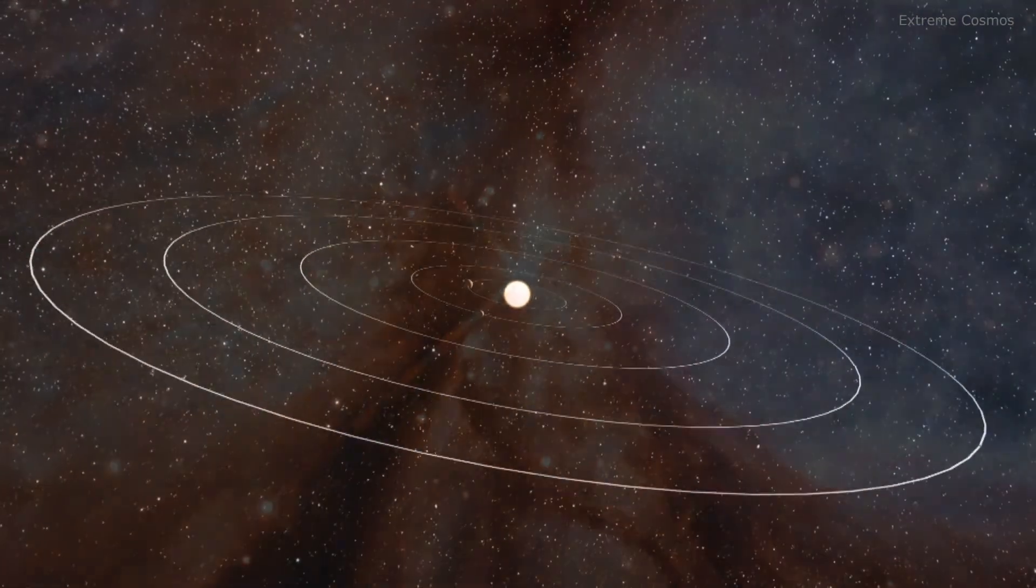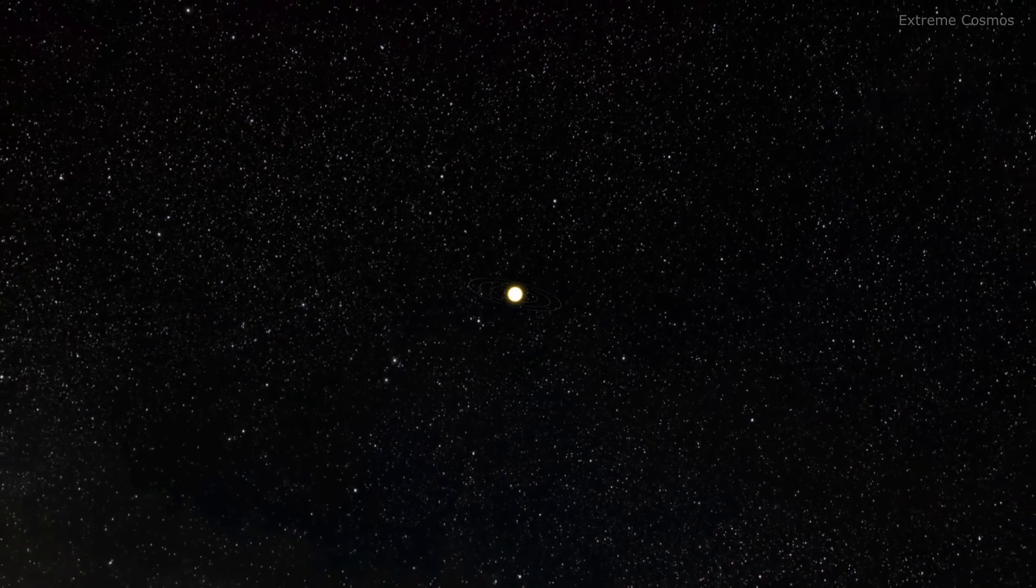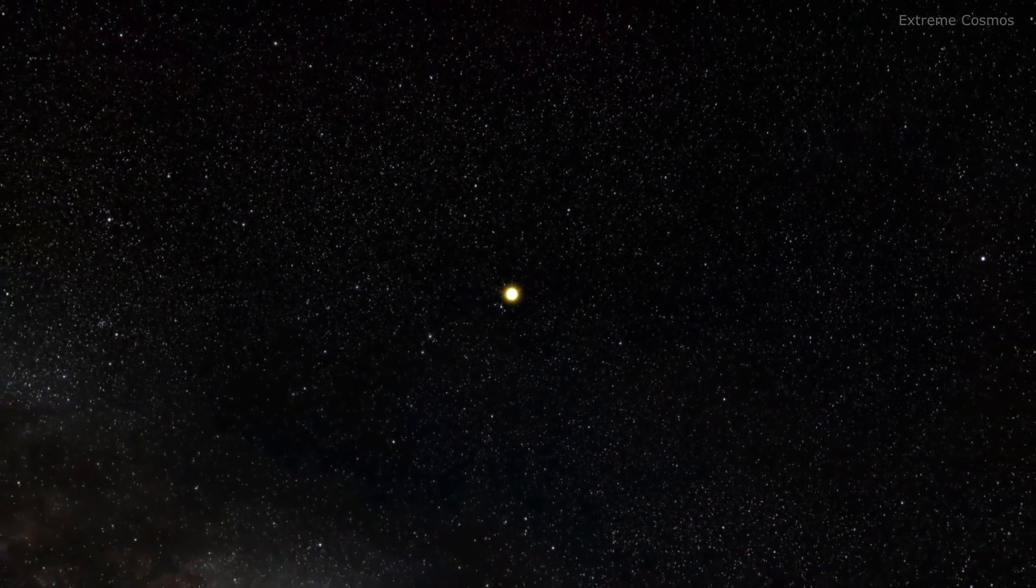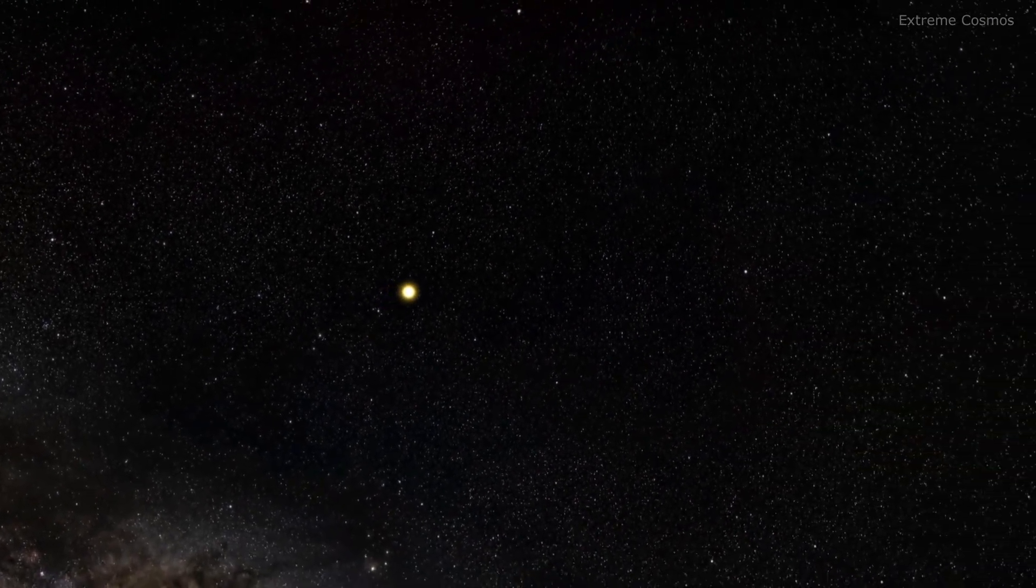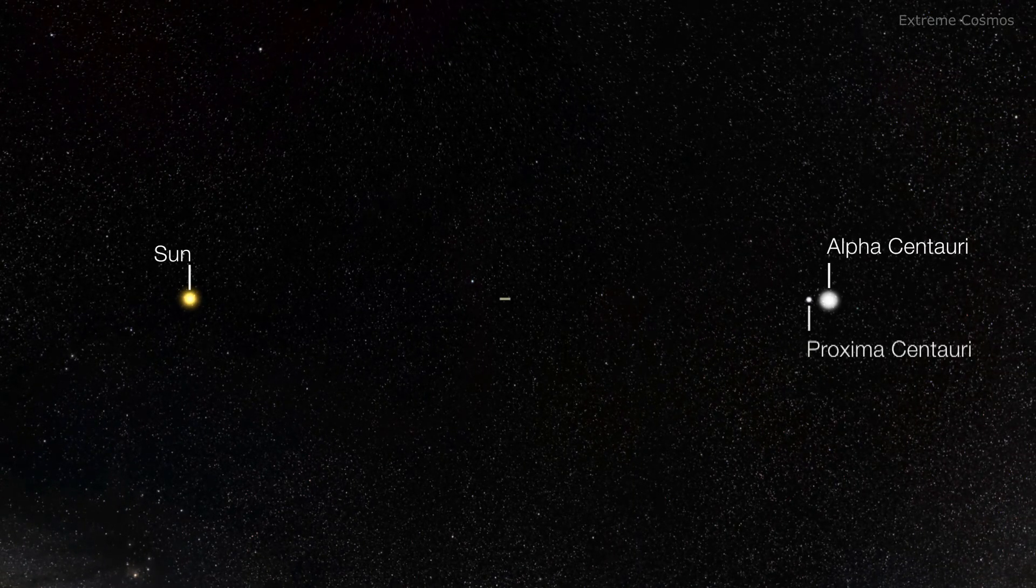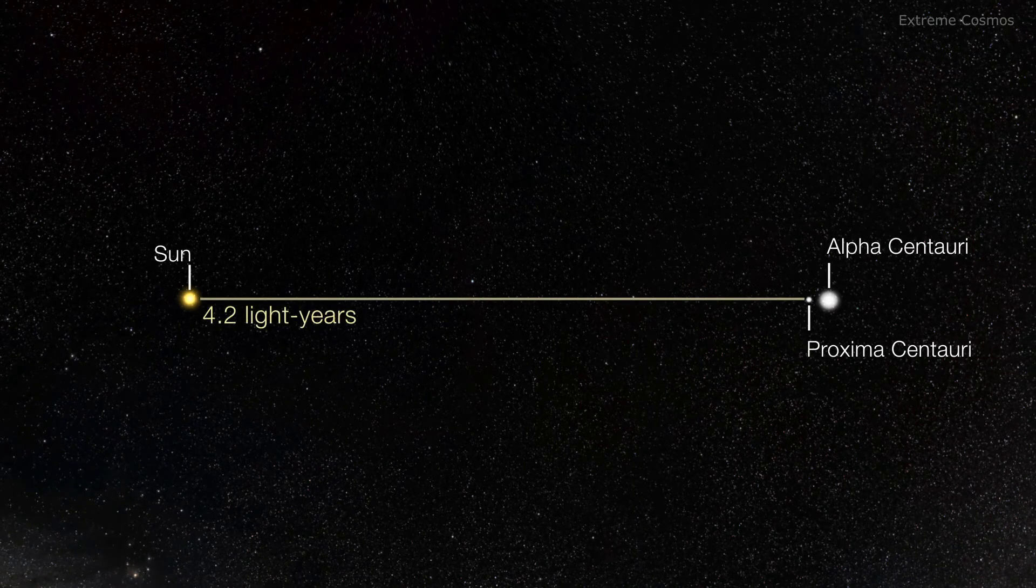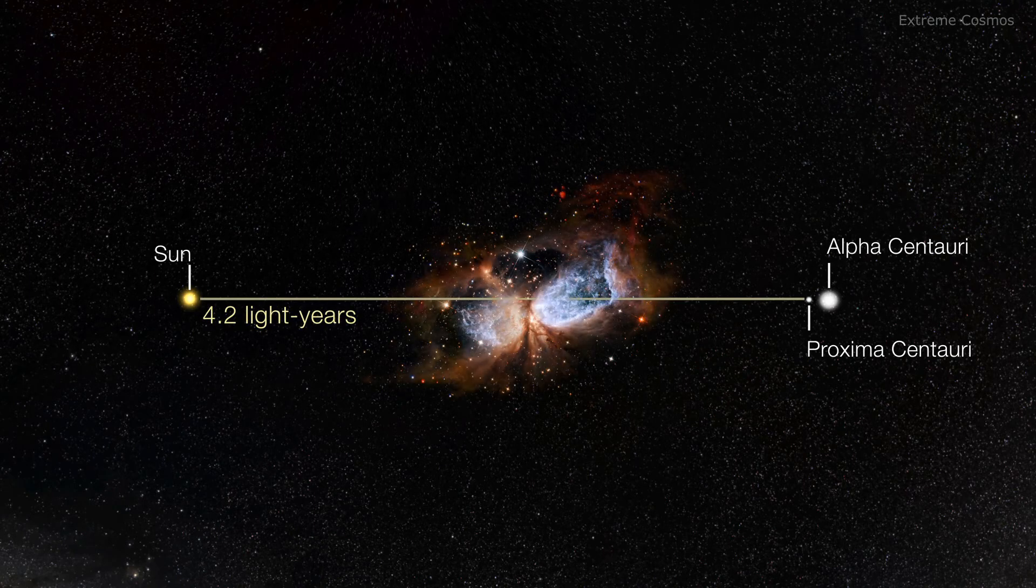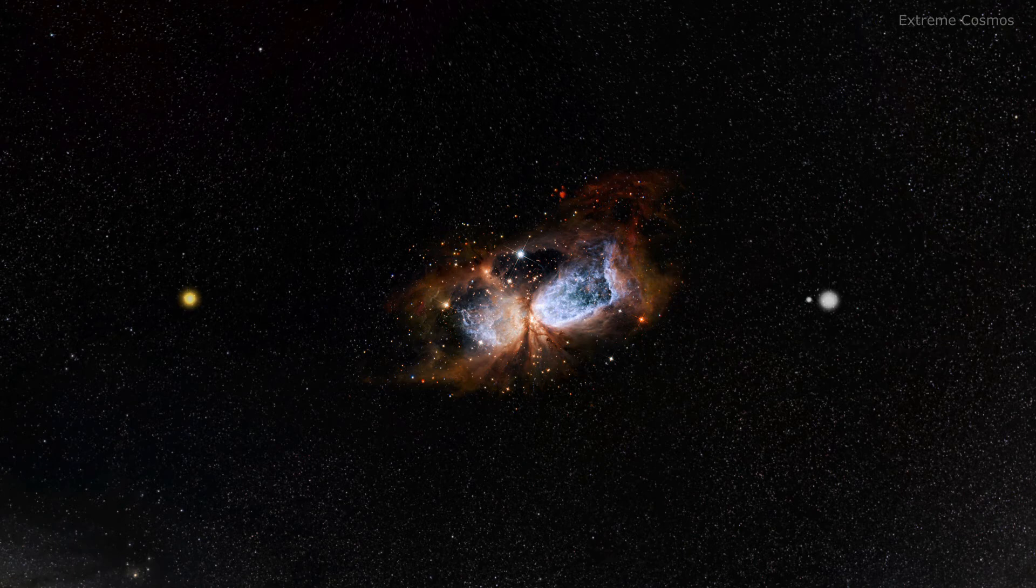The cloud itself is relatively small by the standards of star-forming regions. Around two light-years in size along its longest axis. This is about half the distance between the Sun and Proxima Centauri, our nearest stellar neighbour, making it far smaller than more familiar star-forming regions like the Orion Nebula and Carina Nebula.